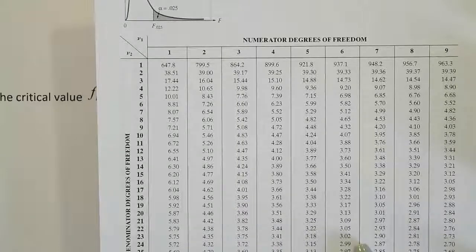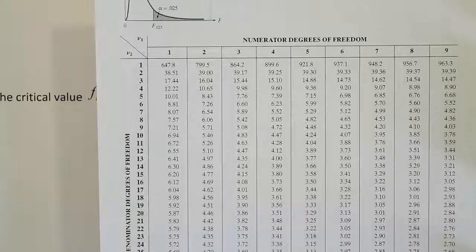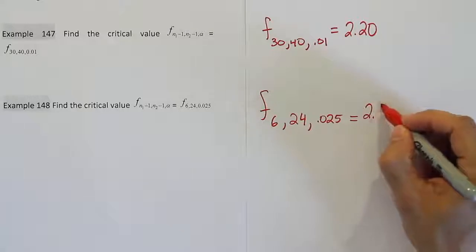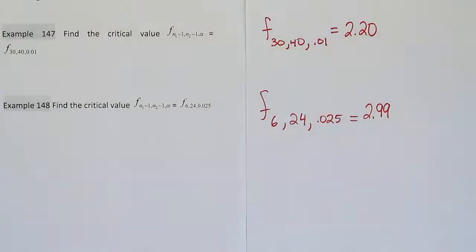2.99. Okay, so we found the answer 2.99. Alright, so those two examples illustrate how to use the F-tables to find your critical values.